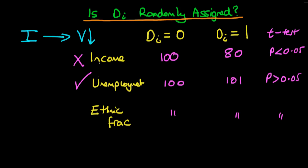We could further do a regression of violence on the various variables in question, which would also help us determine whether these variables were in fact important in determining the level of violence within a region. We would probably include the variable di as part of this regression as well, to ensure that we're not omitting an important variable.